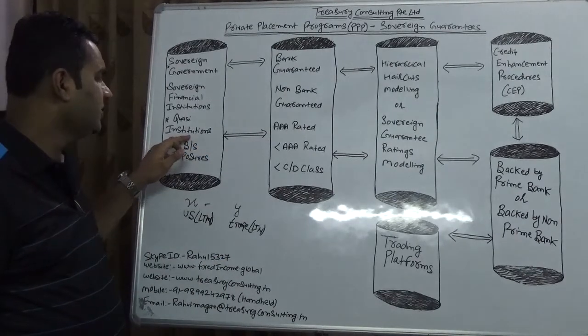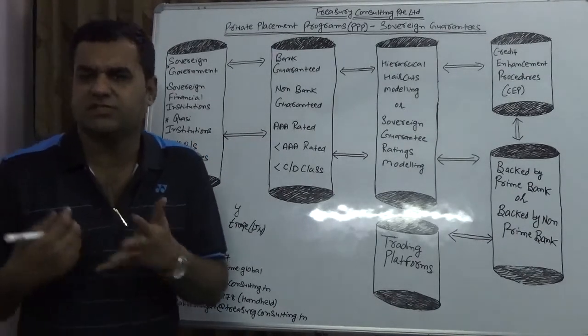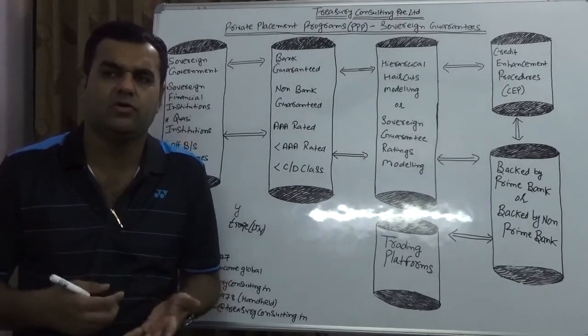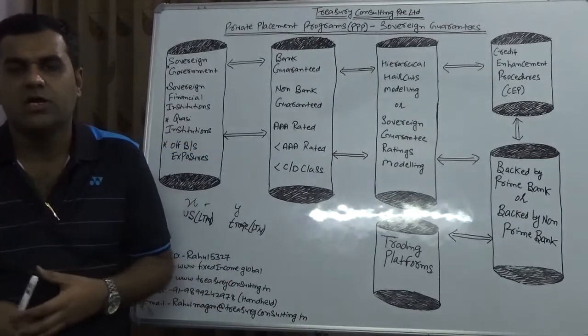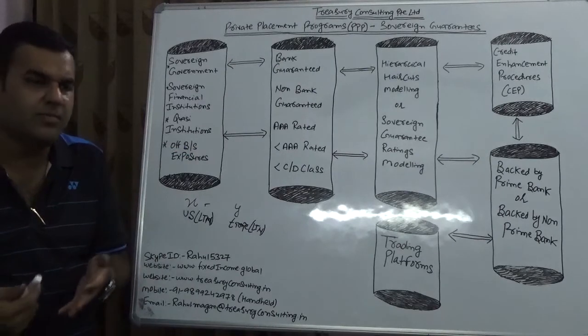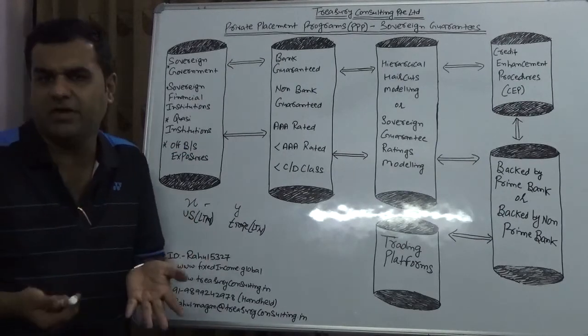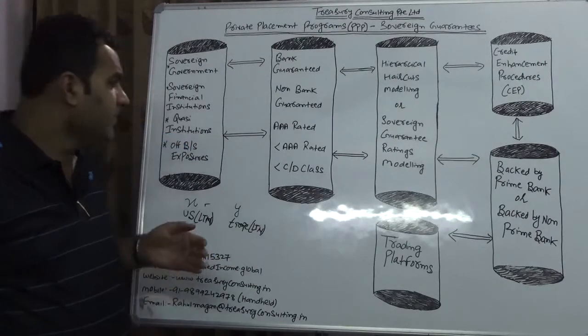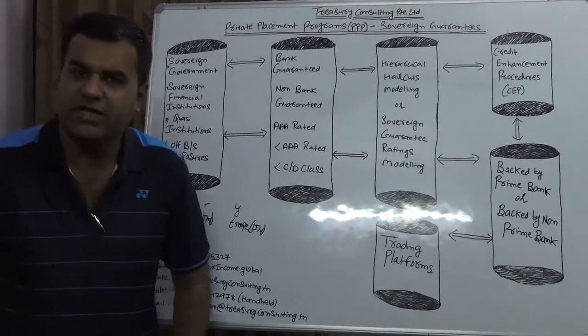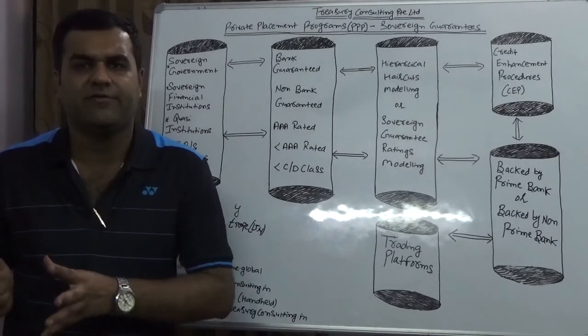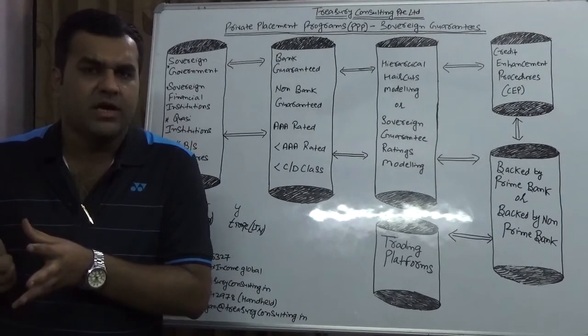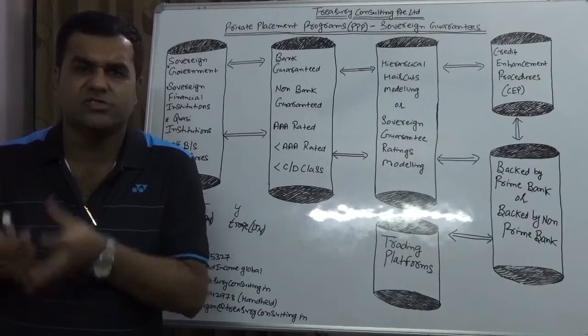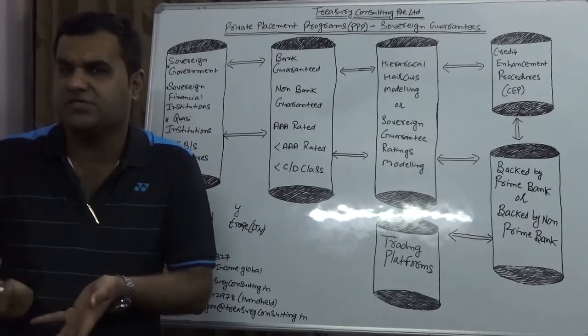If they issue any certificate, it's being certified by the United States government. Then you have quasi institutions. These are institutions which are partly owned by government and partly owned by them, like DBS Singapore, Development Bank of Singapore. DBS Singapore is majorly owned by government of Singapore but some partly owned by DBS also. So this is quasi.